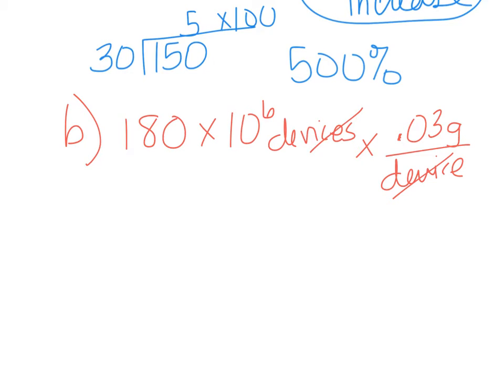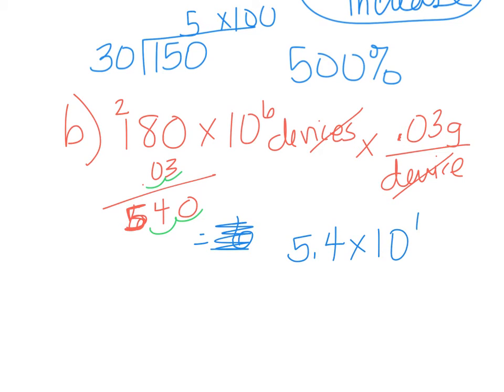It says that each device uses 0.03 grams of gold. So now my devices cancel and I just have to multiply it. I'm going to actually just bring the 0.03 here and do my math over here. I'm going to move my decimal point over 1, 2, 1, 2. So my answer is 5.4 times 10 to the 6 grams.